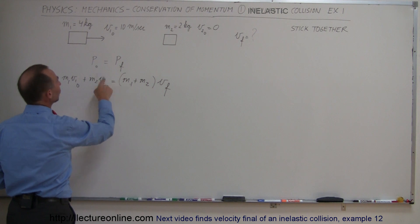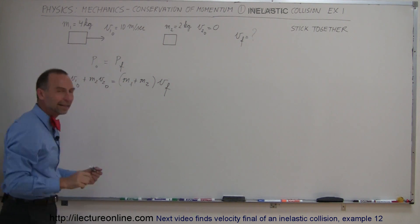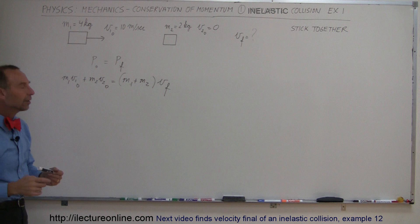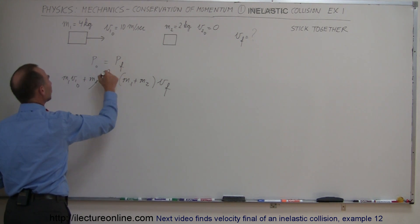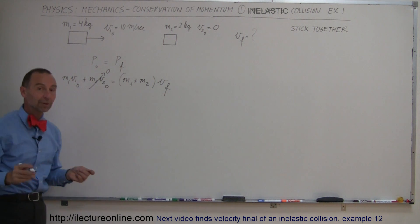Even though I know that v2 initial is equal to zero, I do like to write it in there so that we don't forget about it in the future. So just always write the same thing down. Now right away we realize that v2 does not have initial velocity, so that simply drops out.